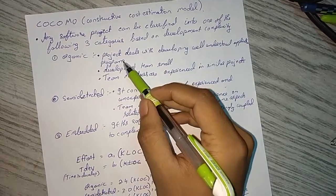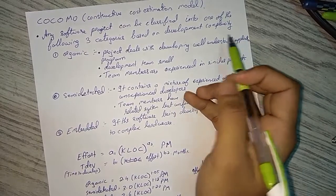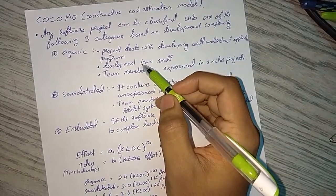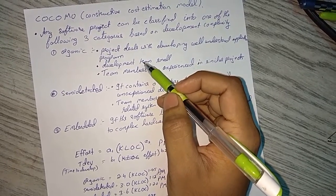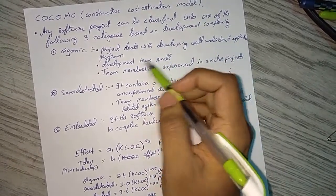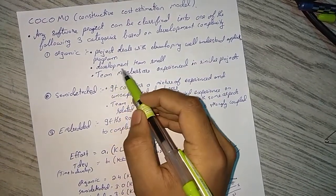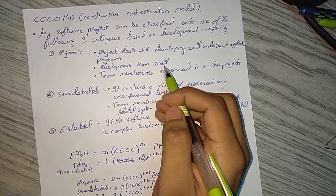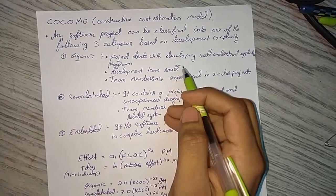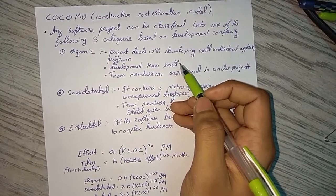In organic, we have projects which deal with developing well-understood application programs. That means if you have a program and you have done the program before, then you can see that it is a well-understood program. Next point is development team is small, because you don't need a high capital for this and you don't need high employment.